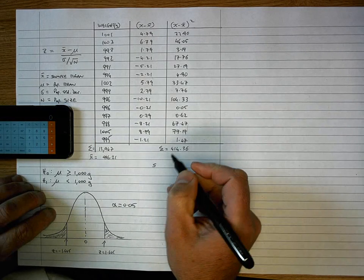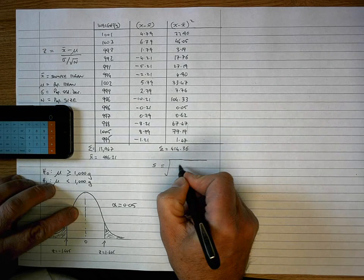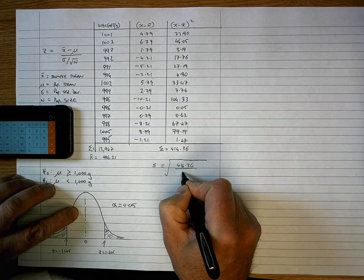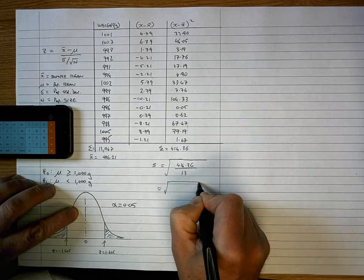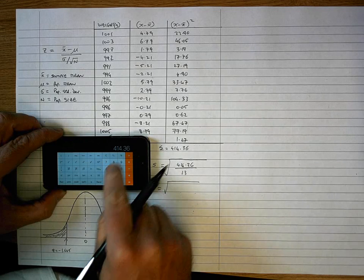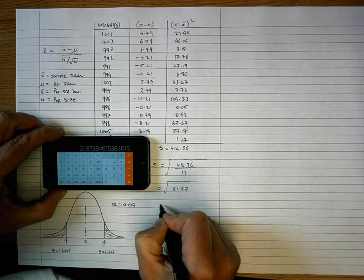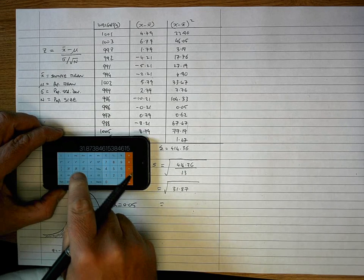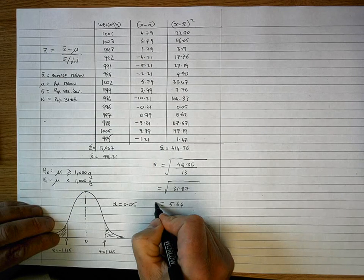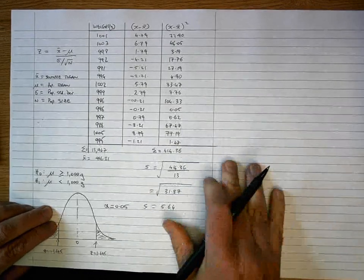And now my formula for my standard deviation is equal to the square root of the sum of all of the X minus X-bar squared, which is 414.36, divided by n minus 1, which is 14 minus 1, which is 13. So let's work that out. 414.36 divided by 13 is equal to 31.87. And take the square root of that, using my calculator, I get a result of 5.64. So I've now worked out the sample standard deviation, and I now can plug that value into my formula. So on the right-hand side, let's go ahead and do that.